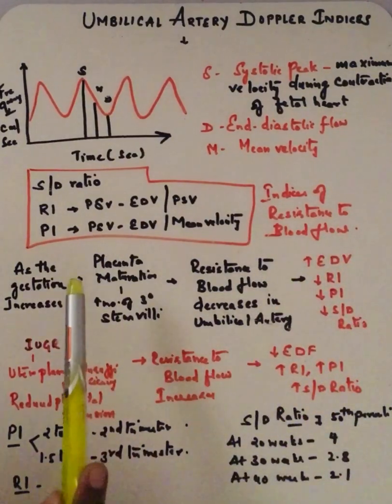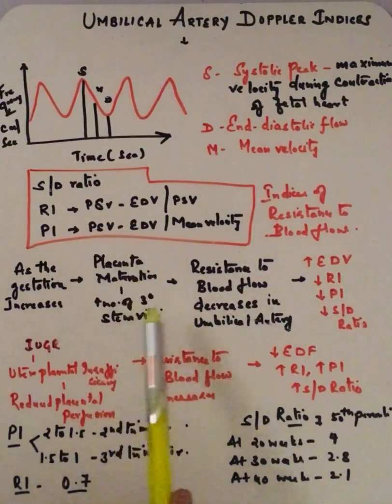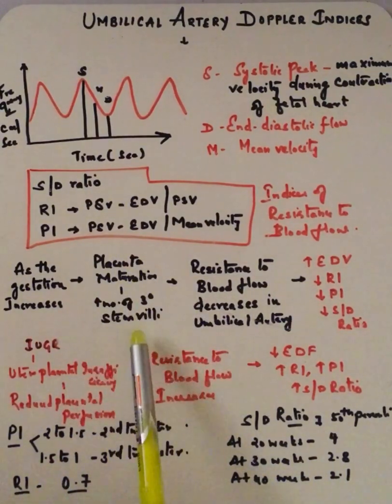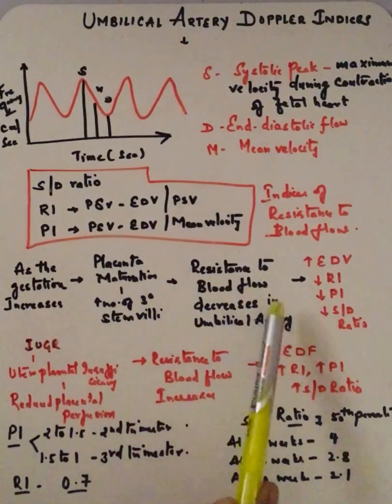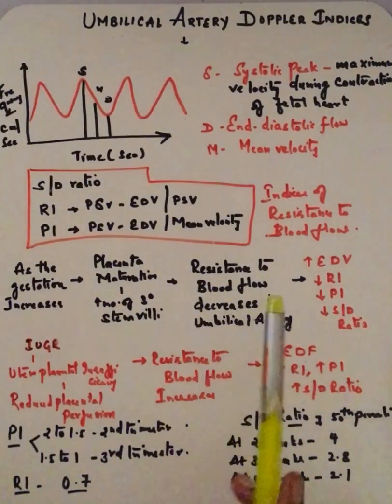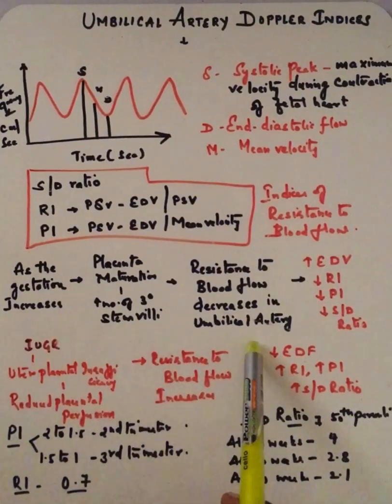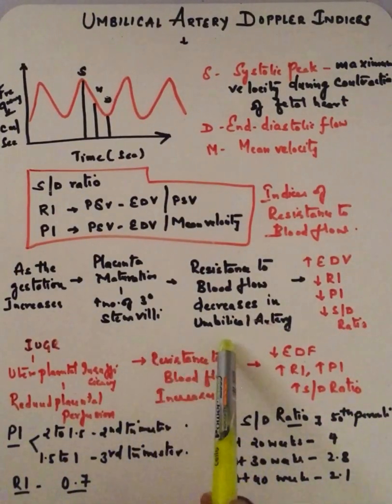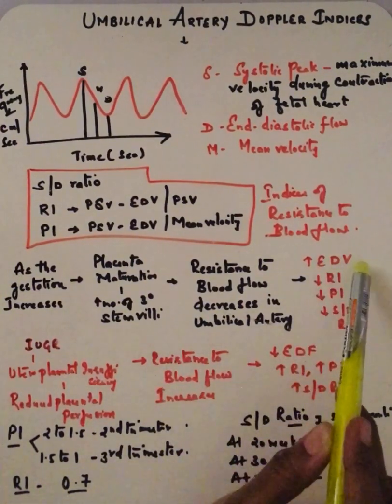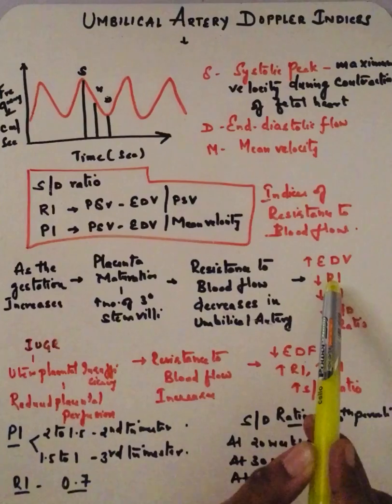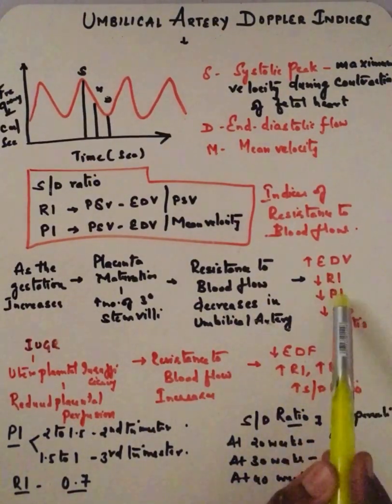These are the indices of resistance to blood flow. Coming to physiology: as gestation increases, there is maturation of the placenta and an increase in the number of tertiary stem villi. This causes a decrease in resistance between the placenta and fetus. As resistance decreases in the umbilical artery, blood flow from fetus to placenta continues forward during diastole. Since resistance within the placenta is less, there is forward flow, so end-diastolic volume will be more.